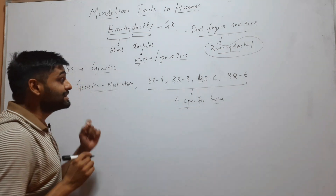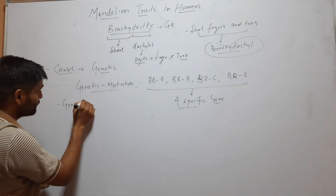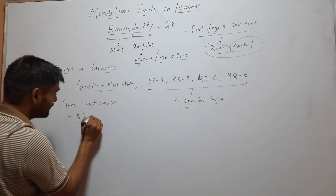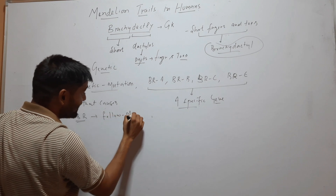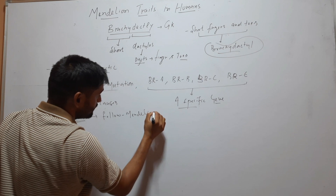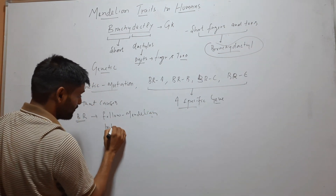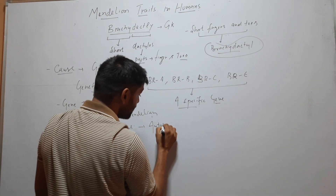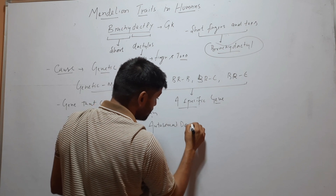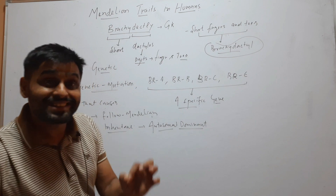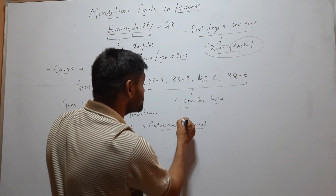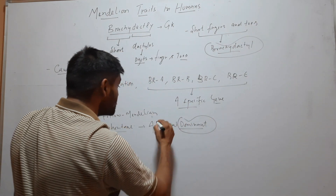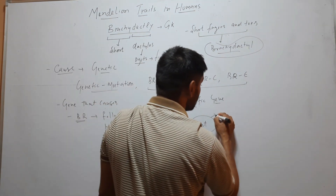The gene that causes Brachydactyly follows Mendelian inheritance, and that inheritance is autosomal dominant. This means the gene is present on autosomes and its expression is dominant — it will express itself in the heterozygous condition. So it is autosomal dominant, meaning it is not sex-linked.